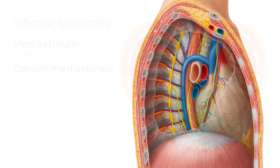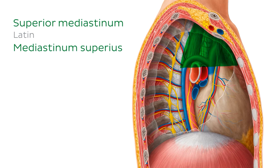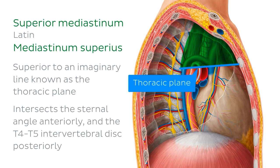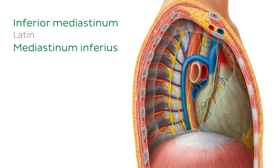Now let's get into the nitty-gritty of what the mediastinum is all about. As typical anatomists, we like to divide things up into smaller divisions to make it easier for us to explore, and of course the mediastinum is no different. The mediastinum as a whole can be subdivided into two major divisions. Firstly, we have the superior mediastinum, which is found superior to an imaginary line known as the thoracic plane, intersecting the sternal angle anteriorly and the T4 to T5 intervertebral disc posteriorly. And of course, if we have a superior, there must also be an inferior mediastinum.